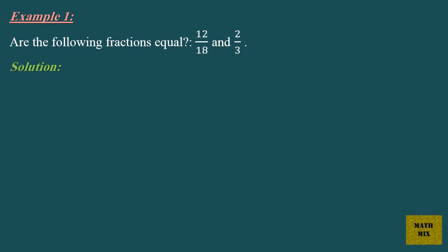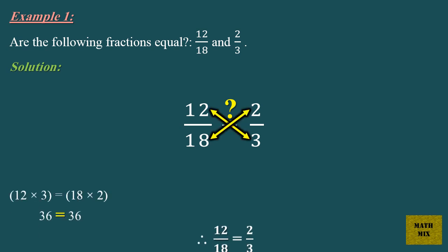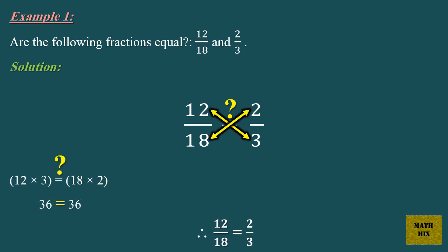Example 1. Are the following fractions equal: 12 over 18 and 2 over 3? Solution. Does 12 over 18 equal 2 over 3? Does 12 times 3 equal 18 times 2? 36 equals 36. Therefore, 12 over 18 equals 2 over 3.